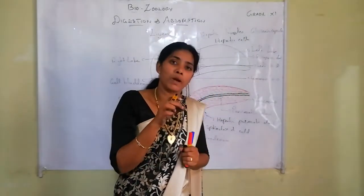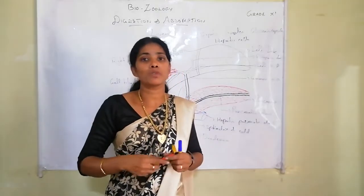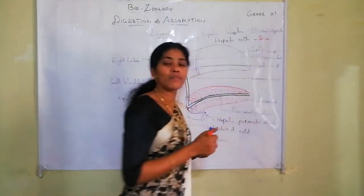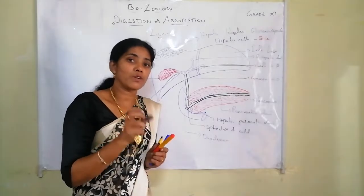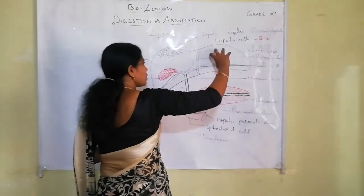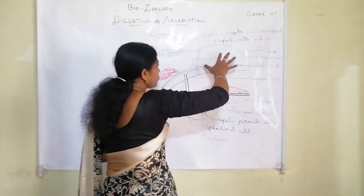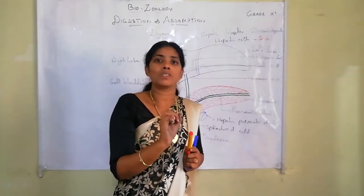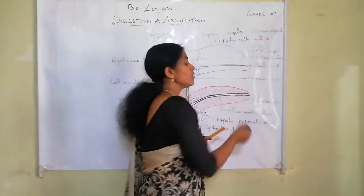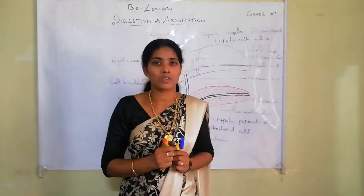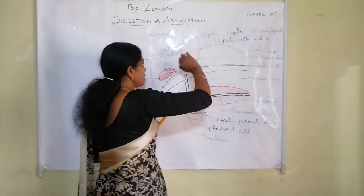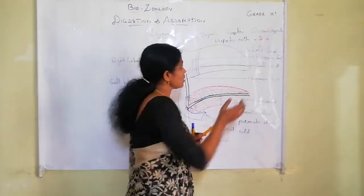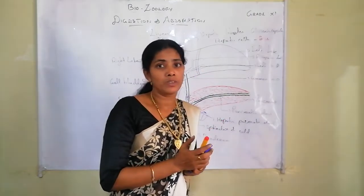The hepatic cells produce the secretion of the liver, which is known as bile. Each lobule is covered by a connective tissue capsule known as Glisson's capsule. The bile secretion is collected by ducts and stored in a pouch-like structure called the gall bladder.